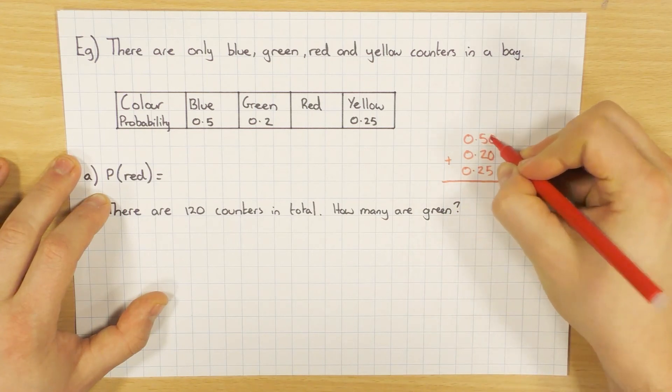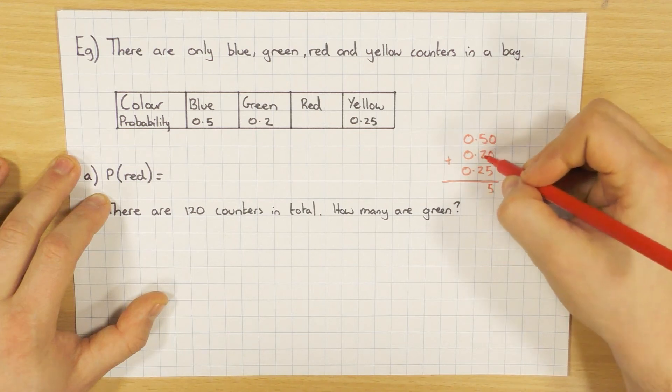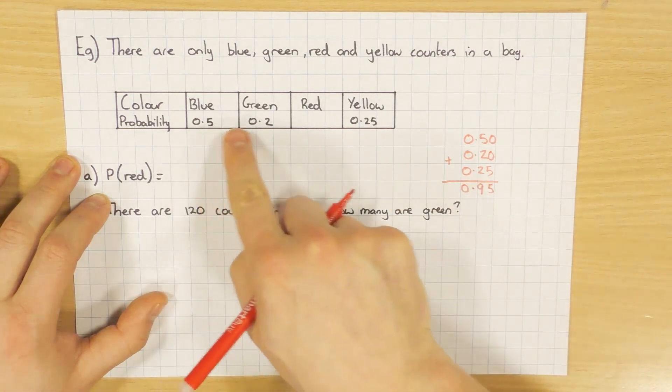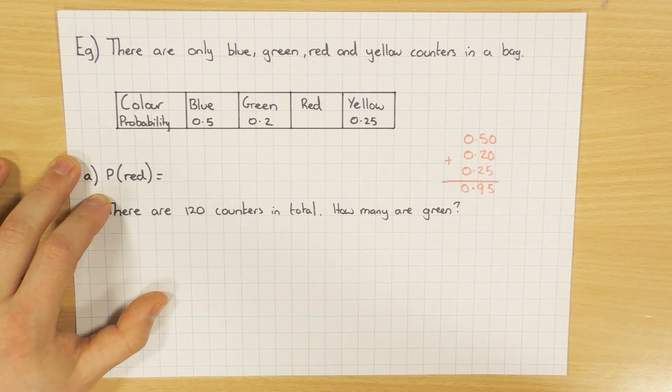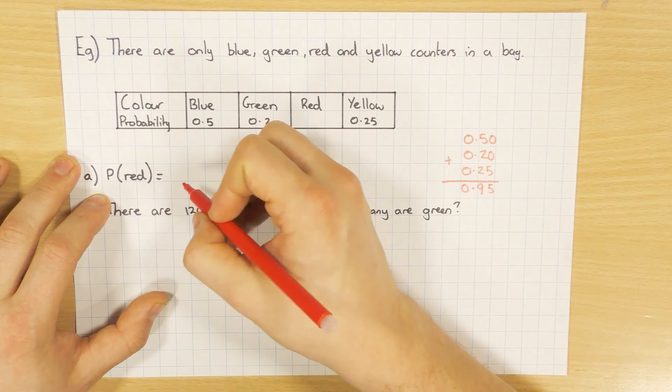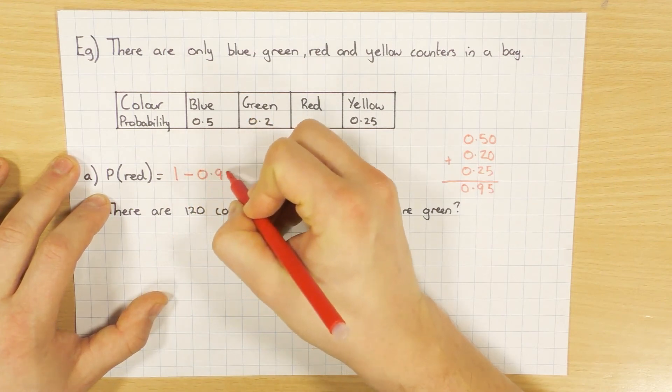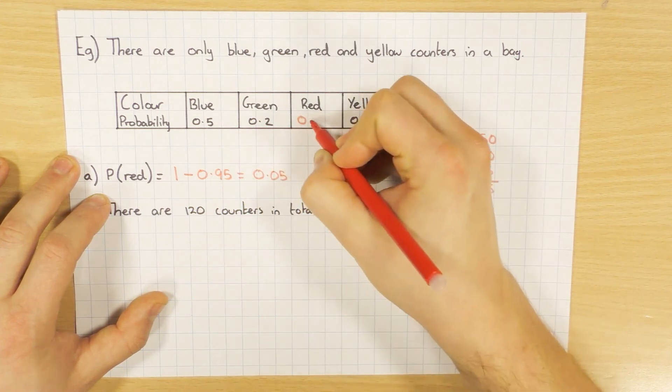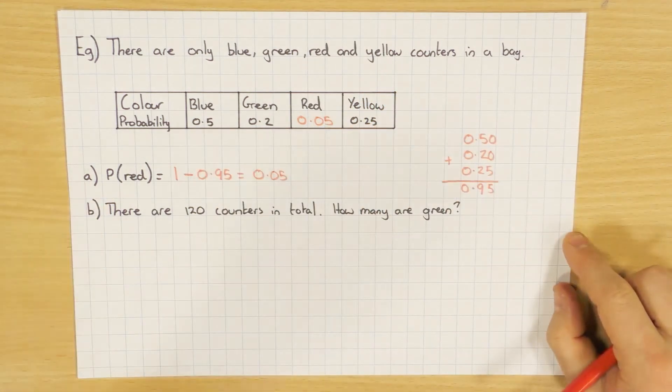I'm just going to add in my missing zeros so I don't get confused. 0 and 0 and 5 is 5. 5 and 2 and 2 is 9. So if I add up the probabilities that I do know, I get 0.95. And like I said a minute ago, if you know all the possibilities, all the probabilities will add up to one. So I'm going to do one, take away all the ones that I know, which will leave me with 0.05. So that's the probability I will choose red. So just a quick fact there, they all add up to one.